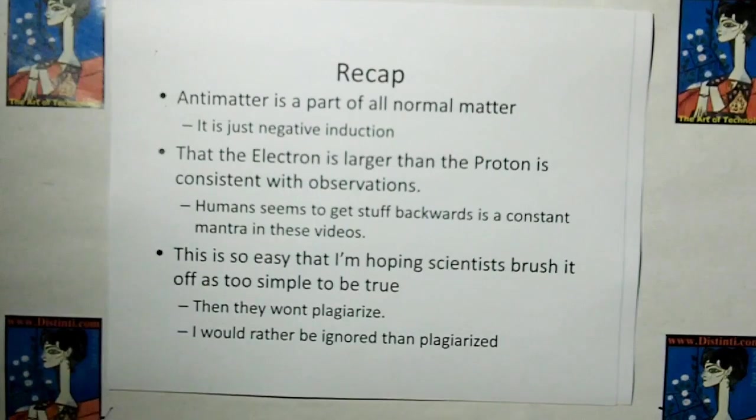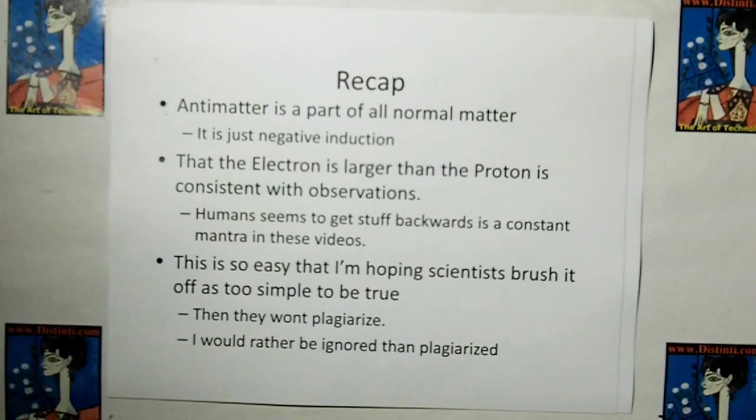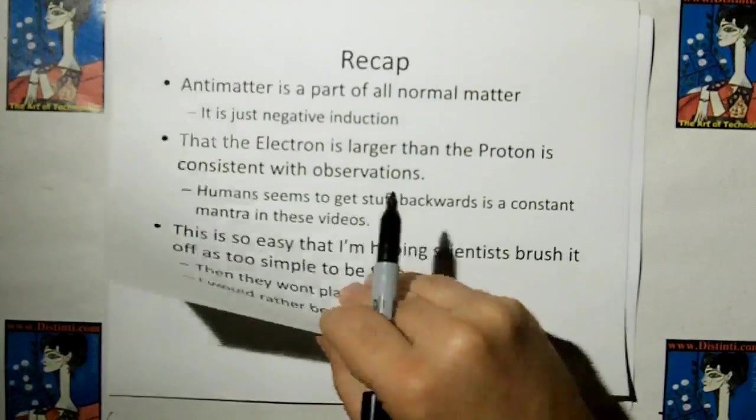So recap, antimatter is just a part of all normal matter. It's just negative induction. That the electron is larger than the proton is consistent with observations. Like I said a million times, humans always seem to get stuff backwards before they get it right. And actually this is so easy, I'm hoping scientists brush it off as too simple to be true, then they won't plagiarize me. I would rather be ignored than plagiarized.